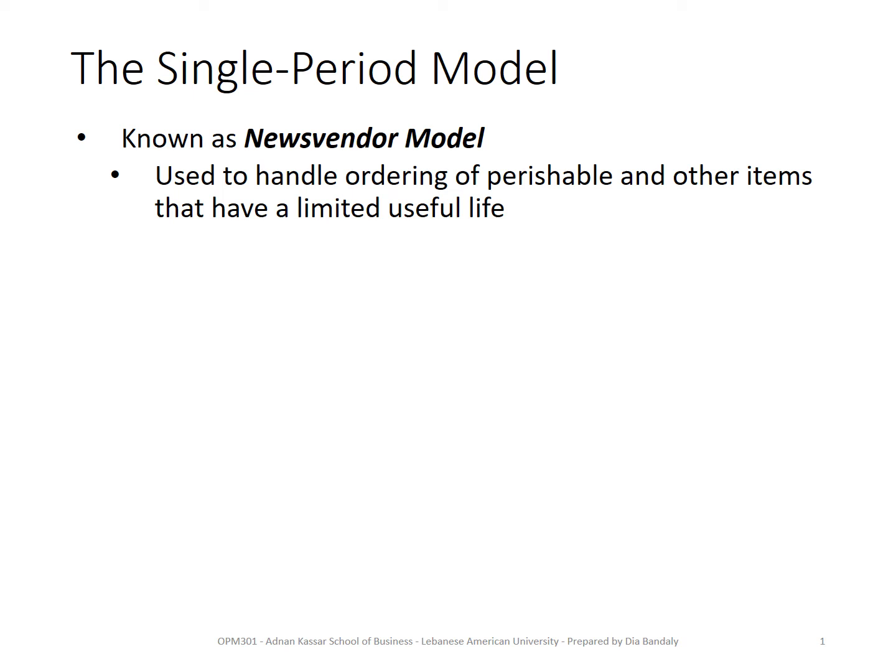The single period model is also widely known as the news vendor model. You may wonder why it's called the news vendor — newspapers are a very typical type of perishable product. You can buy a newspaper only during the day it was issued, so newspapers can be sold only for one day, and that's why this model is mainly known as the news vendor model.